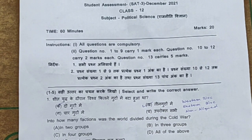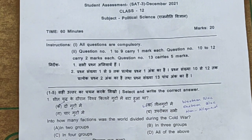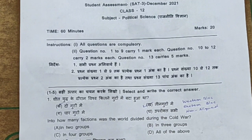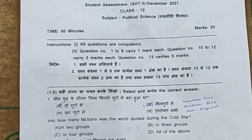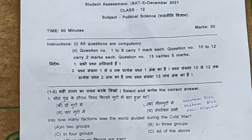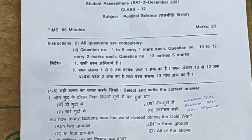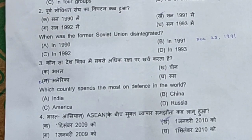So students, during the Cold War the world was divided into 3 groups: Number 1 — Western Bloc, led by America. Number 2 — Eastern Bloc, led by the Soviet Union. Number 3 — Non-aligned and neutral countries. So the correct answer is: in 3 groups.